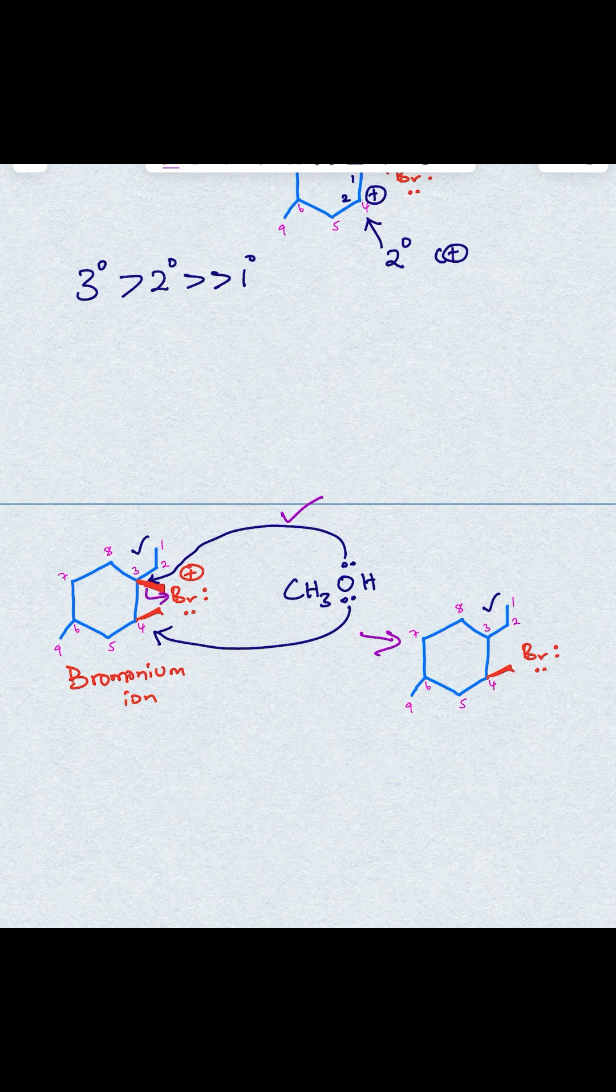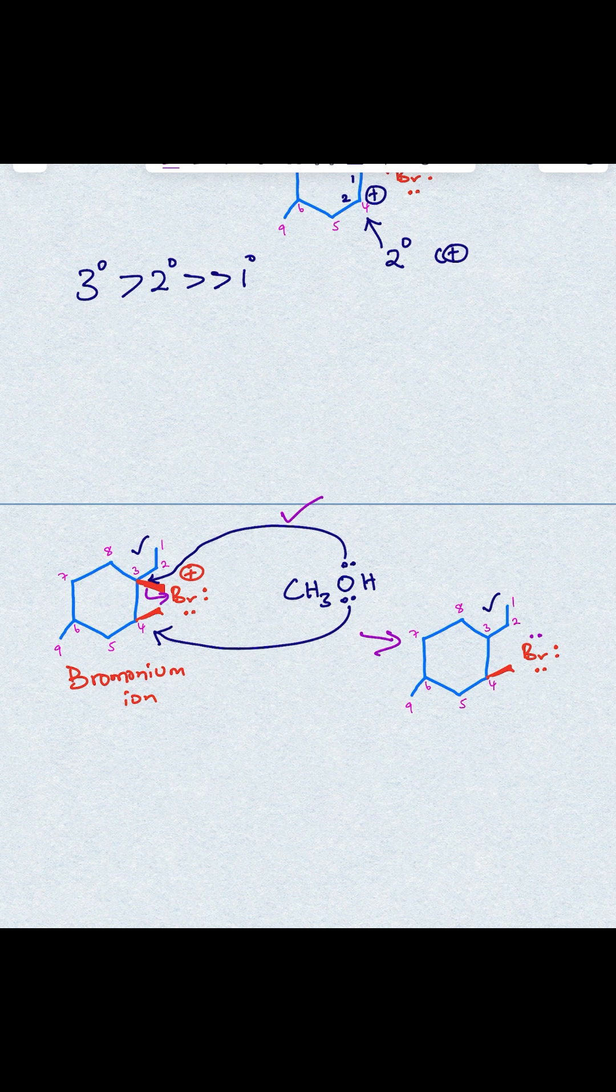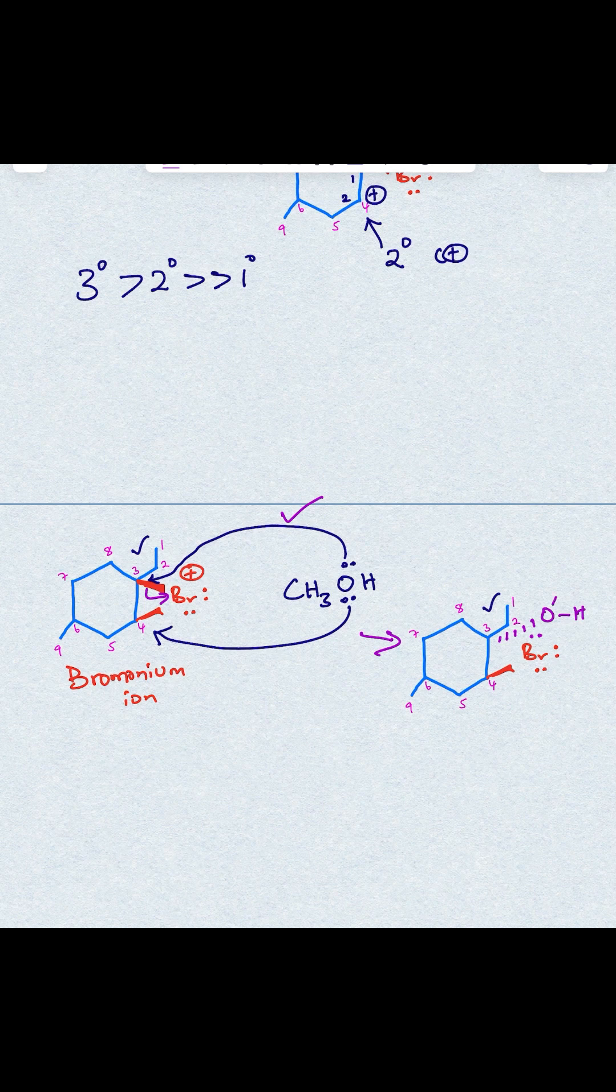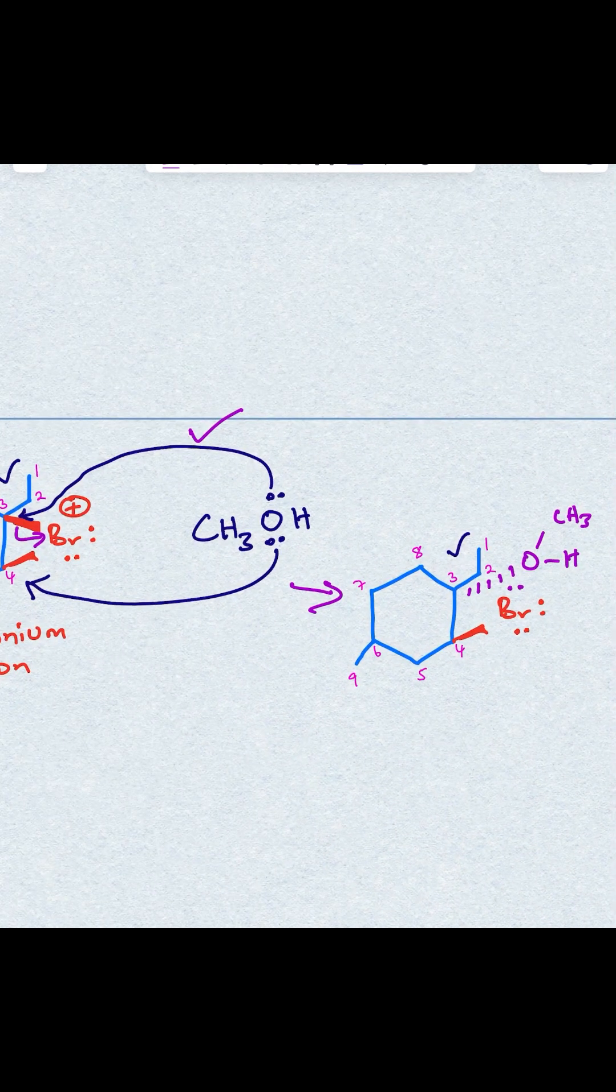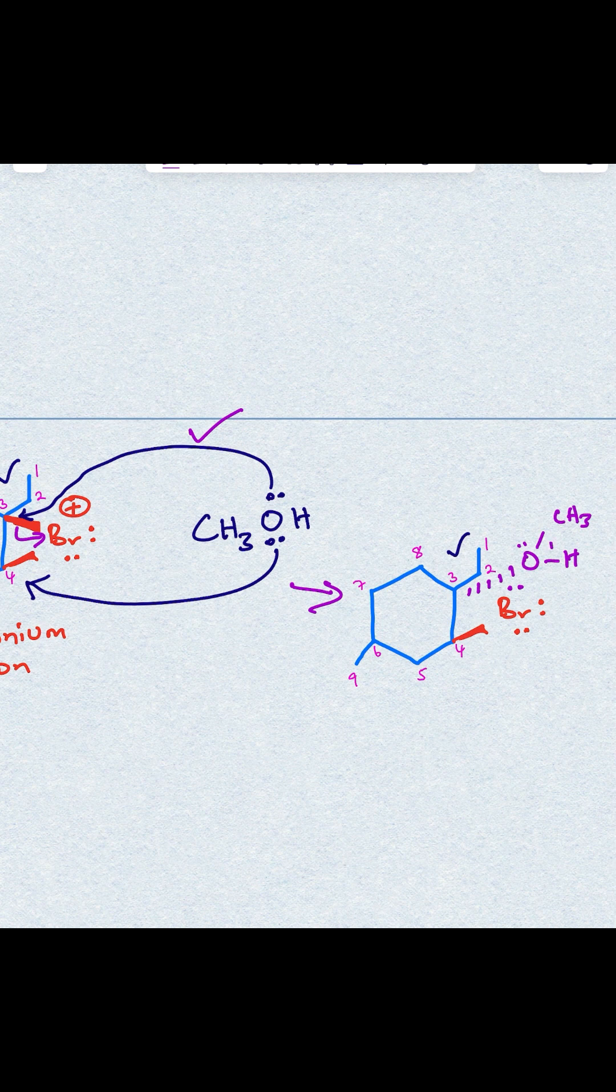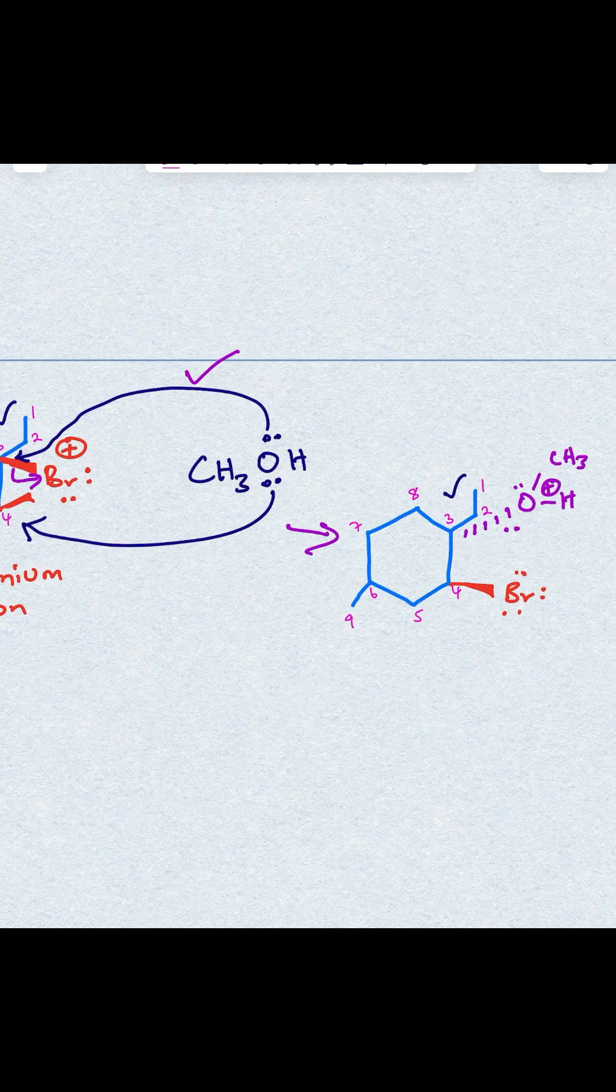Those electrons will flow to the bromine, and now it becomes neutral, but now you end up adding the alcohol from the other side. So HCH3, and because you used one of the oxygen lone pair of electrons, then you're going to have a formal positive charge on oxygen.